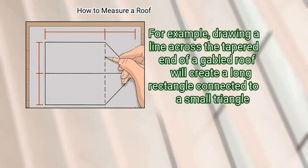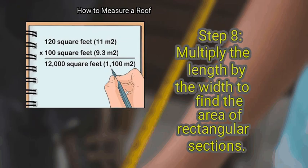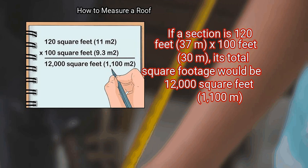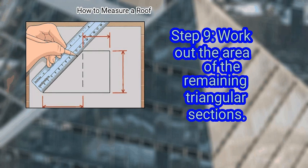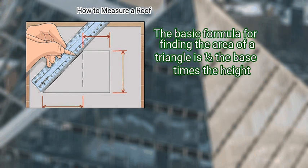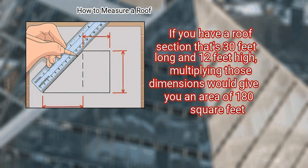For example, drawing a line across the tapered end of a gabled roof will create a long rectangle connected to a small triangle. Step 8: Multiply the length by the width to find the area of rectangular sections. If a section is 120 feet (37 meters) by 100 feet (30 meters), its total square footage would be 12,000 square feet (1,100 square meters). Be sure to find the area of any dormers as well. Step 9: Work out the area of the remaining triangular sections. The basic formula is one-half the base times the height. If you have a roof section that's 30 feet long and 12 feet high, multiplying those dimensions gives you an area of 180 square feet.